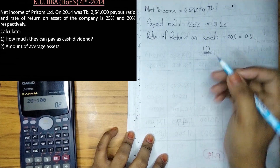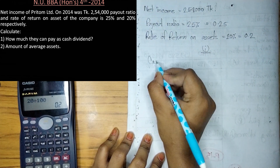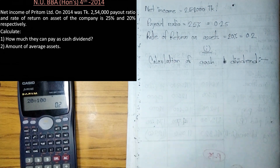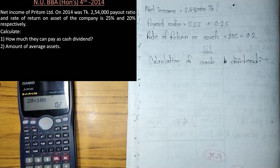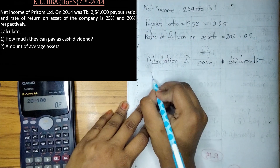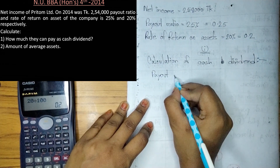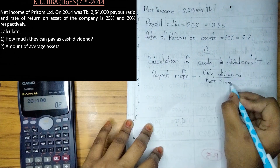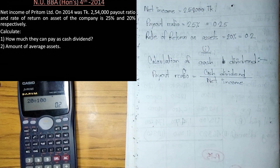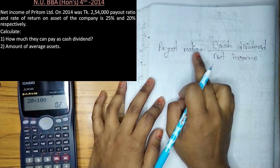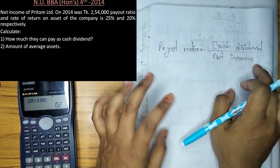So we have to write the calculation of cash dividend and how to give the cash dividend. This is the calculation of cash dividend. The rule is: Payout ratio equals cash dividend divided by net income. Right? So that is the formula we use.